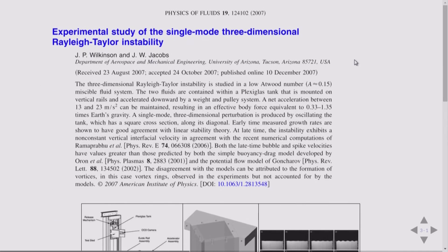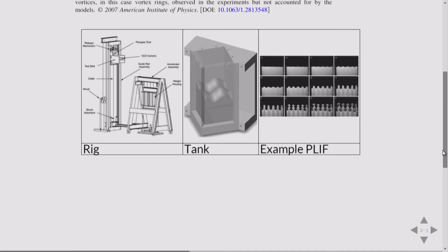The boundary conditions here are periodic. So now that we've introduced that, we can get to the experimental comparison. There's this awesome experiment, which was conducted by Wilkinson and Jacobs in 2007.